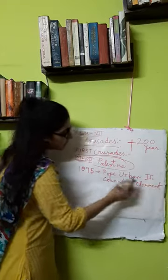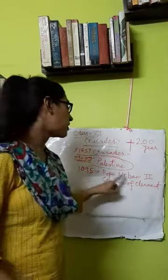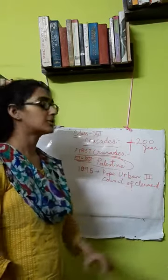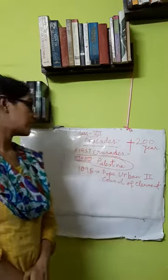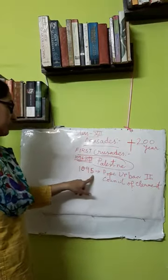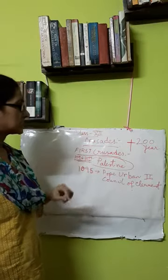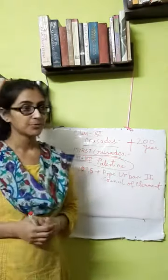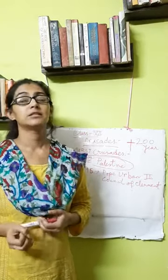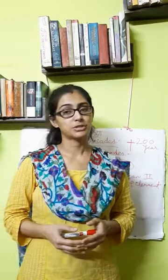Remember this for objective questions: Pope Urban II gave the call for the first crusade from the Council of Claremont in France. After he gave the call in 1095, the first crusade started in 1096. He urged all Christians to join the war to save their holy land, Palestine, from the hands of the Turkish Muslims.